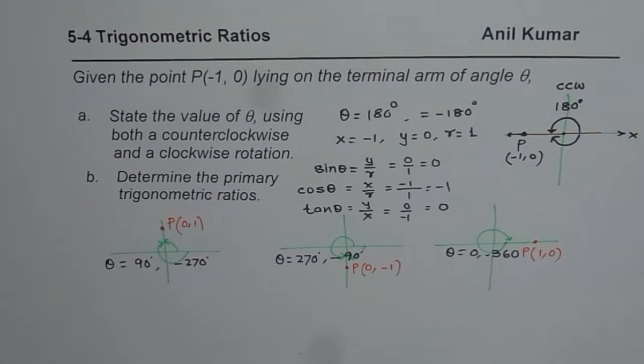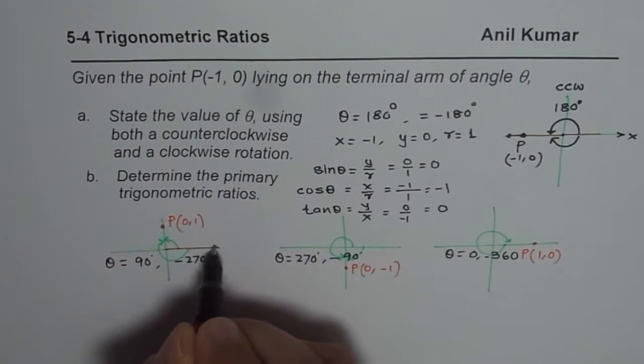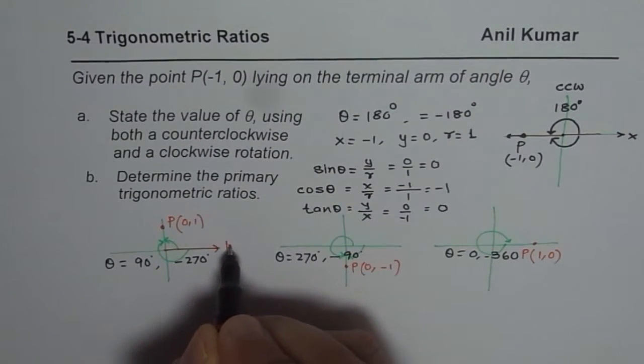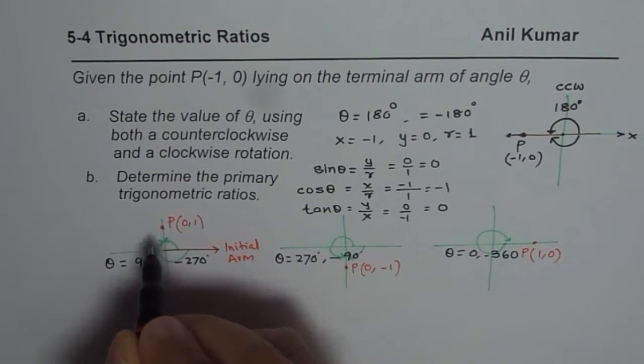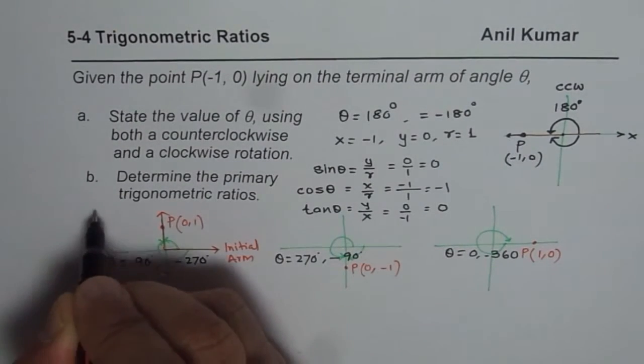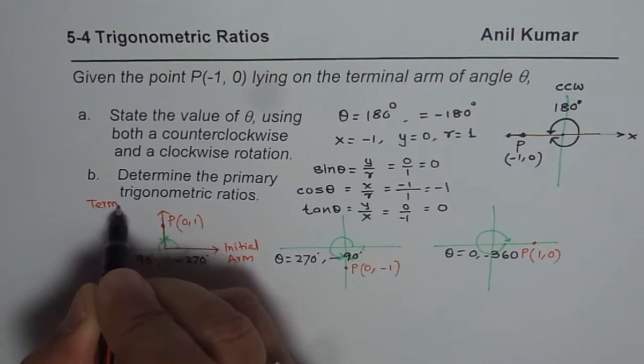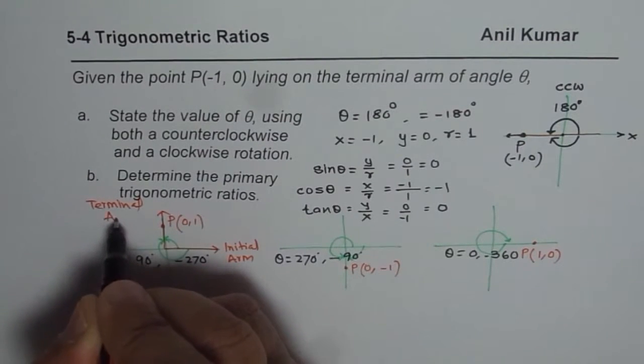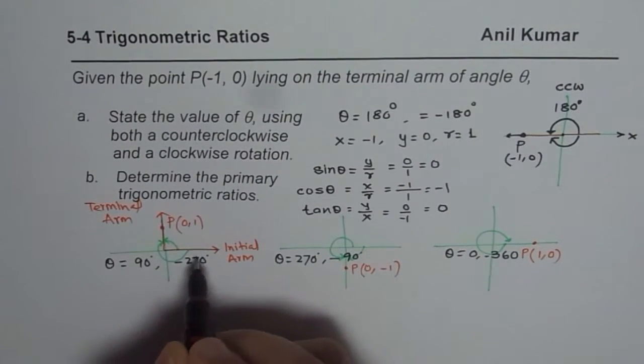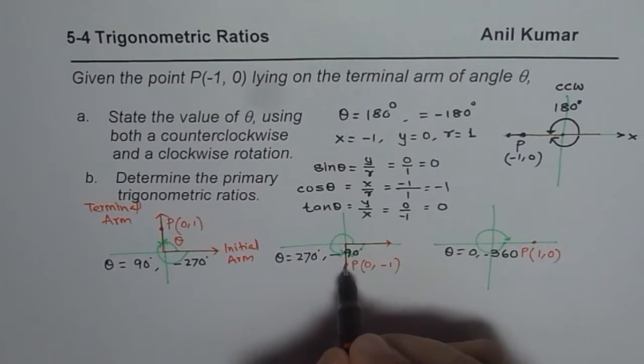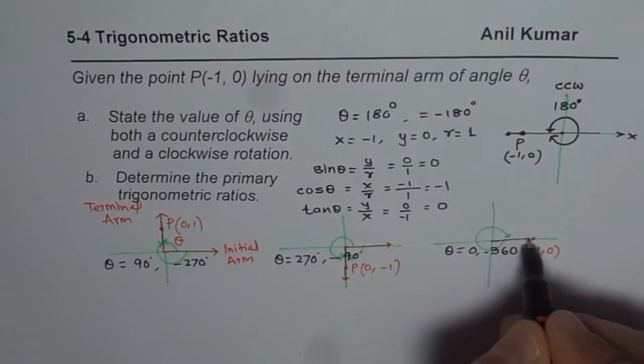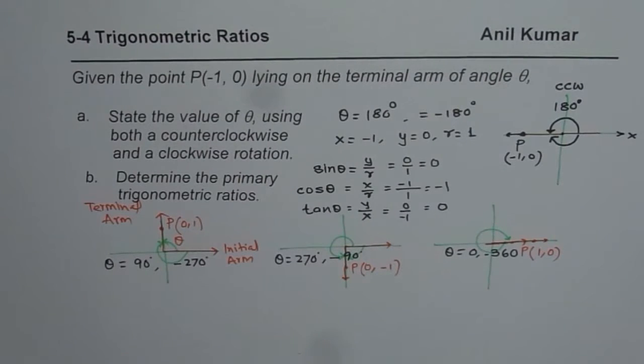Now in all these three, or rather four examples, remember one part: our initial arm is the x-axis. That is the initial arm. And point is on the terminal arm. The angle formed is between the initial and the terminal arm, and we are calling that angle theta. That is how we are getting all the results. Both are on the same line.